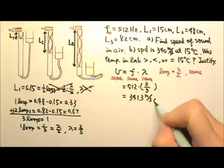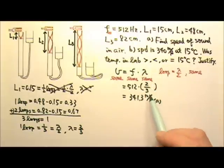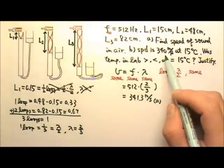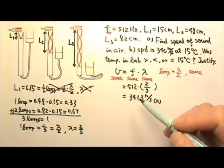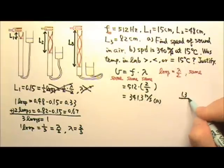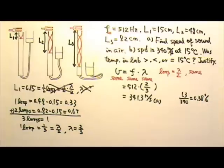And then in part B, now this speed is really close to the 340 meters per second. In fact, the percentage difference, the difference is 1.3. And then if I divide it by 340, I get only 0.38%. That's the percentage difference between the two numbers.